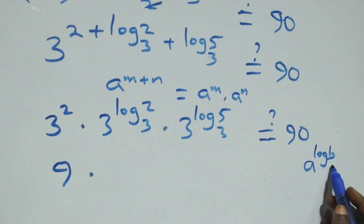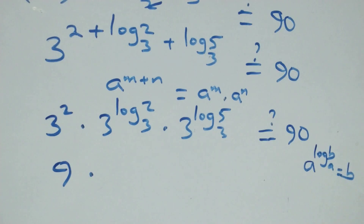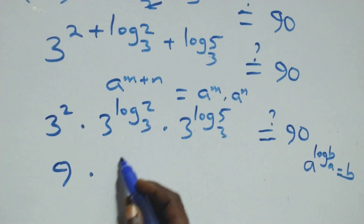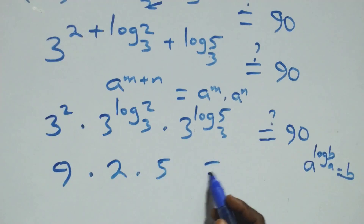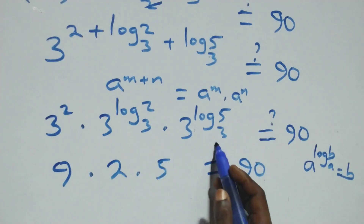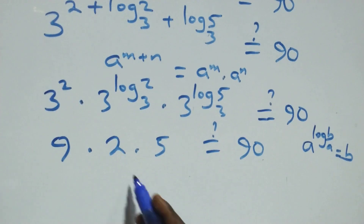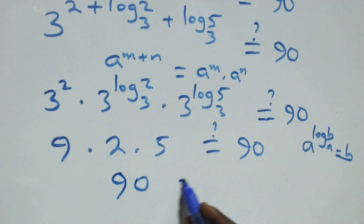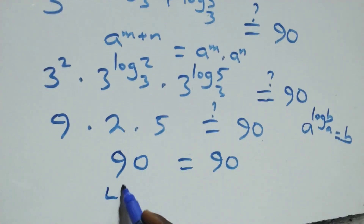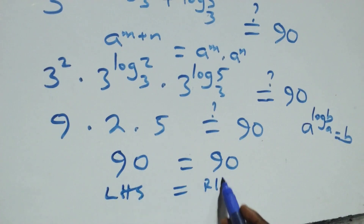Which equals b. This is the same thing as 3 squared times — here we have 5 — which equals 90 here. Then 2 times 5 is 10, and then 3 squared times 10 is 9 times 10, that's 90, which equals 90 here. That is, the left-hand side equals the right-hand side.